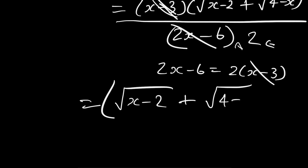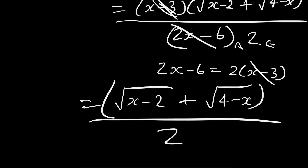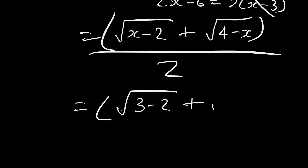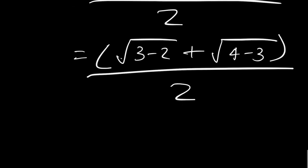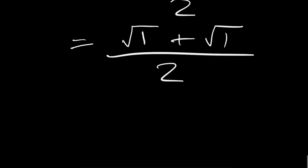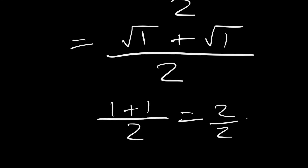The expression becomes root x minus 2 plus root 4 minus x, divided by 2. Now we substitute x equals 3: we get root 3 minus 2 plus root 4 minus 3, divided by 2. This becomes root 1 plus root 1 divided by 2. Since root 1 is 1, we get 1 plus 1 divided by 2, which equals 2 over 2, which is 1. That's the final answer.